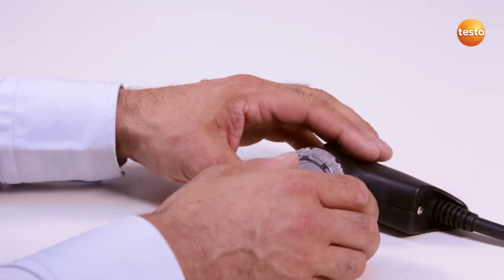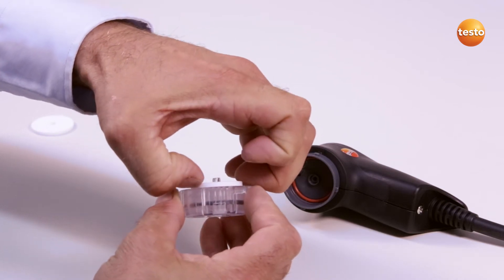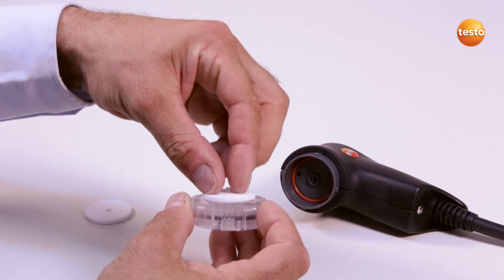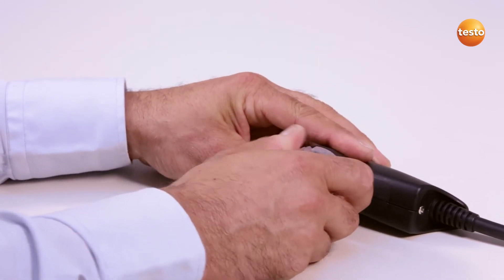In order to exchange the particle filter, I open the filter chamber by turning slightly anti-clockwise. I remove the filter disc and replace it with a new one. I finally replace the filter chamber and close it.